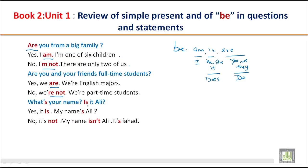Is it Ali? When we ask question, we bring the B form in the beginning. Is it Ali? Yes, it is. My name is Ali. No, it's not. My name isn't Ali. It's Fahad.